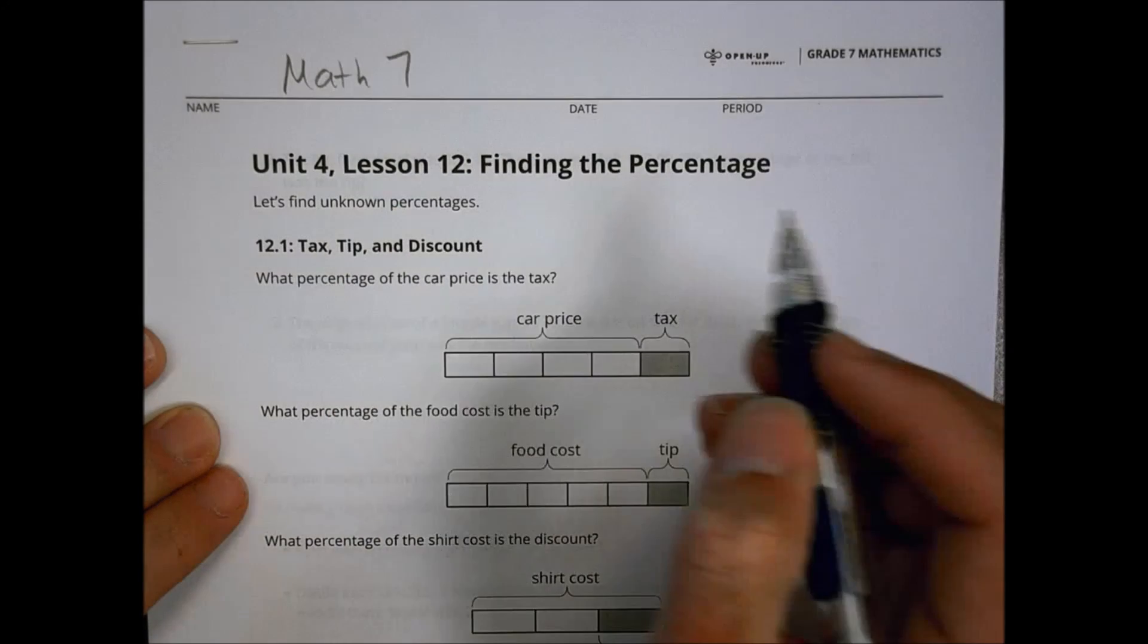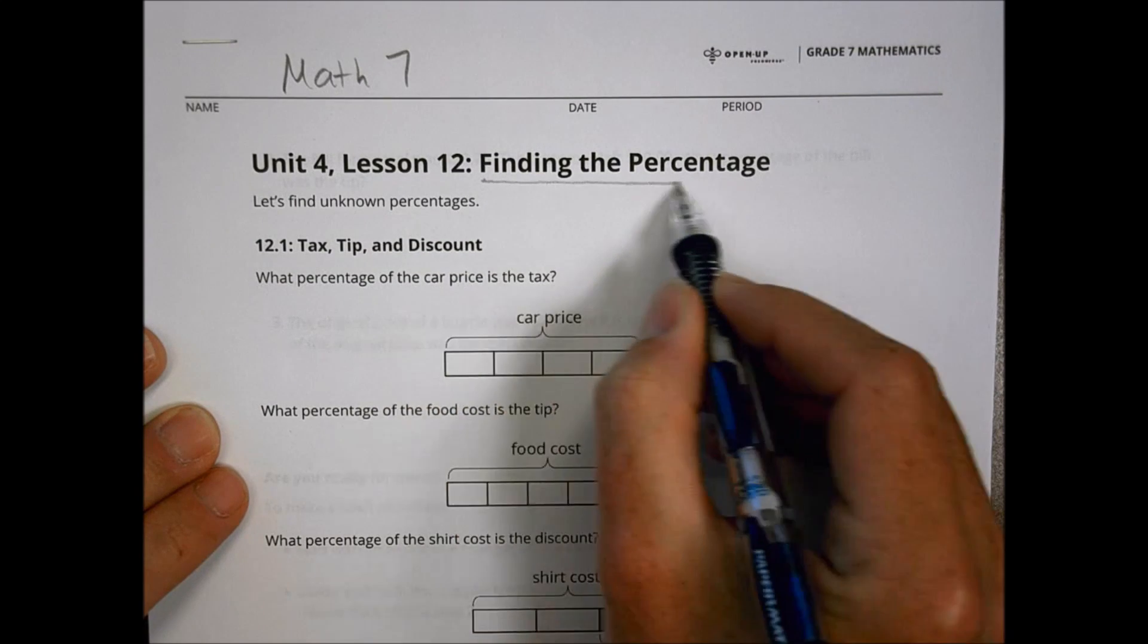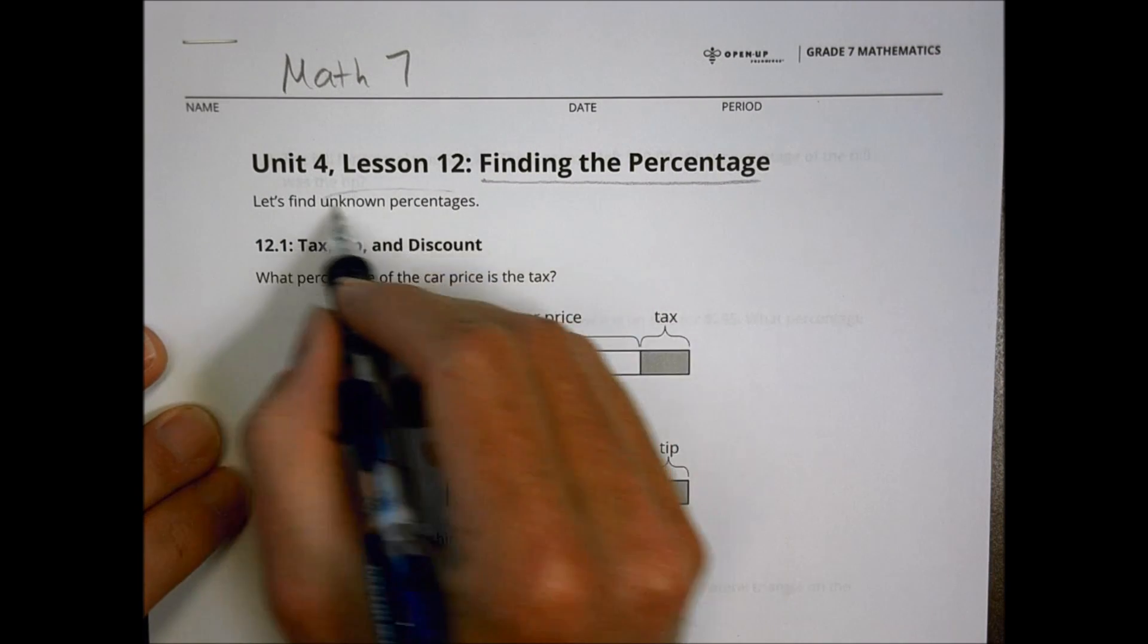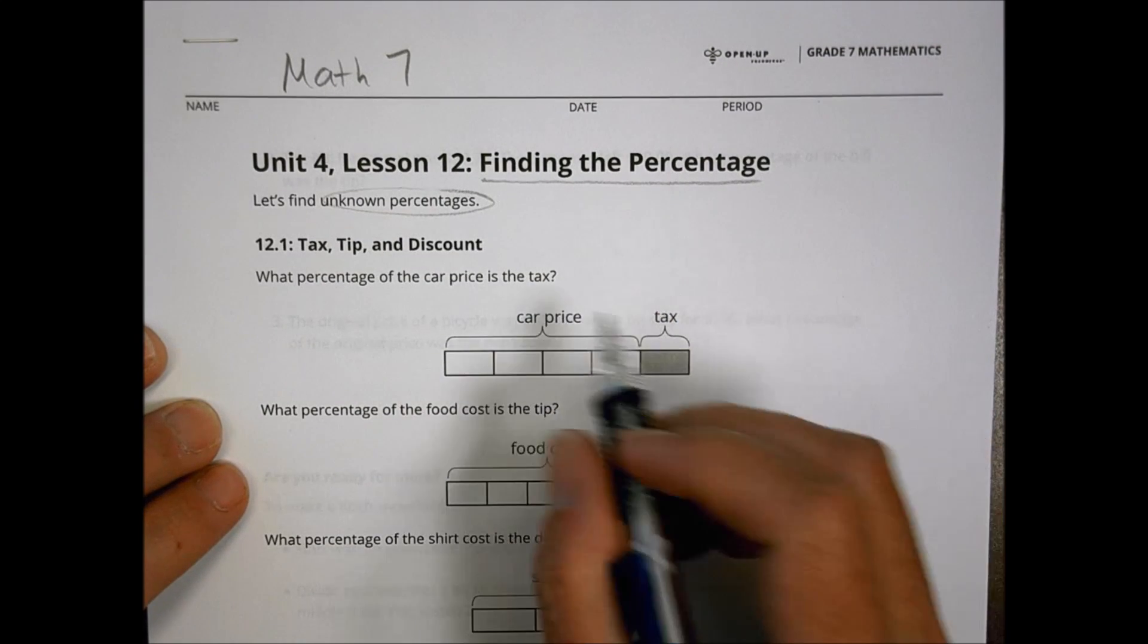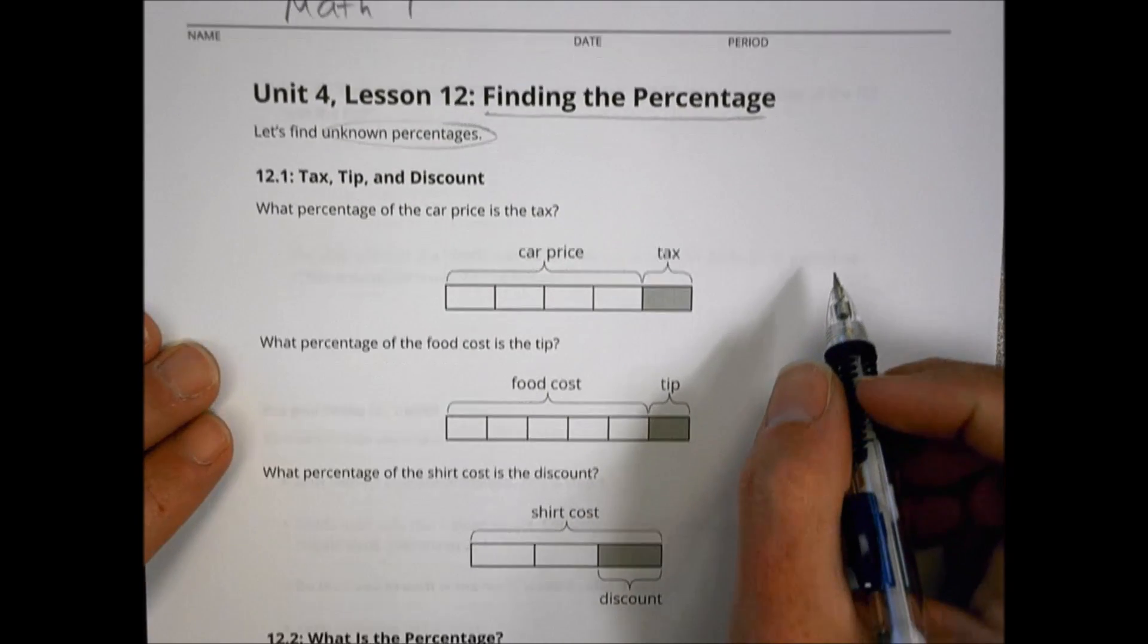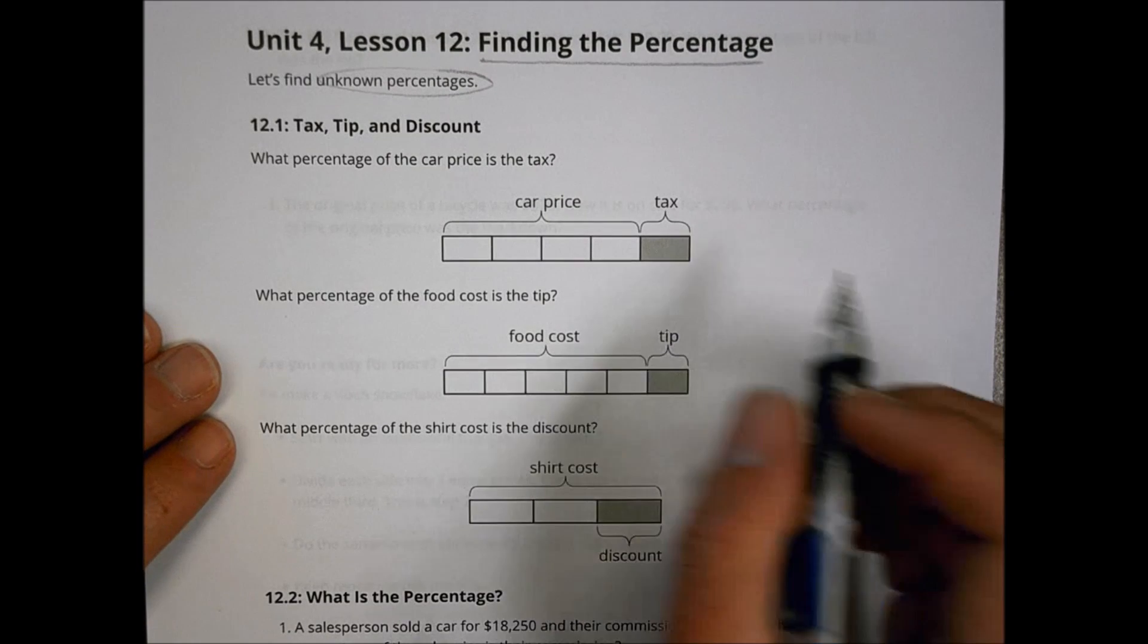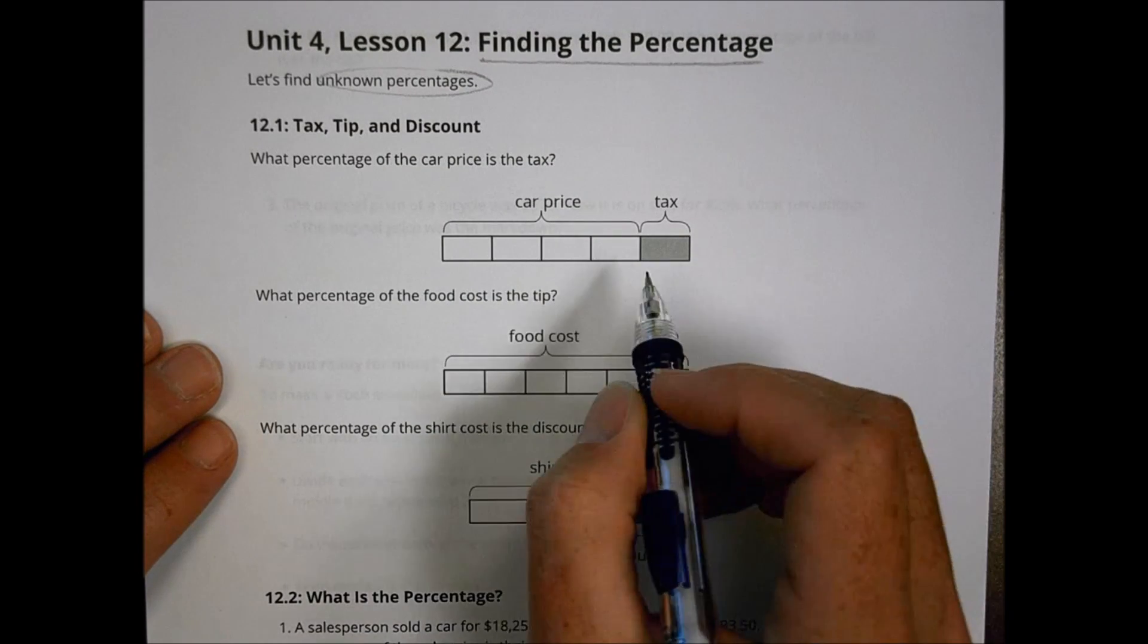Hey, this is Math 7, Unit 4, Lesson 12, called Finding the Percentage. So we're going to find some unknown percentages today. So begin, first of all, with a little look at tax, tip, and discount, how those would look as like a little measure, like a bar here.